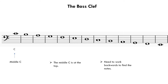Starting from C we have B, A, G, F, E, D, C, B, A, G, F, and then we'll have E. Again, we'll make it similar by going through just the notes on the spaces and just the notes on the lines. So let's get started with the spaces.